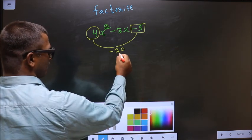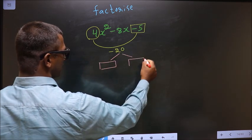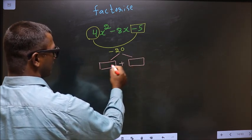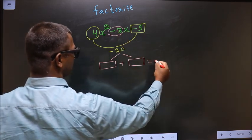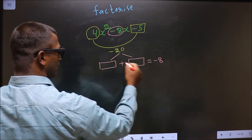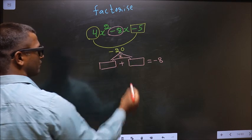Now you should look out for two numbers such that when you add the two numbers, you should get the middle coefficient, which is -8, and also when you multiply, you should get -20.